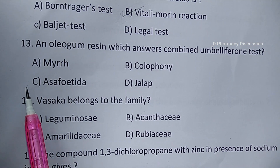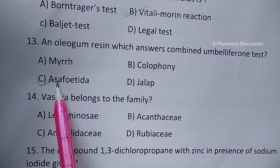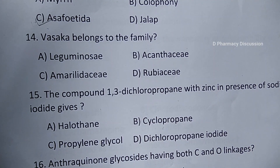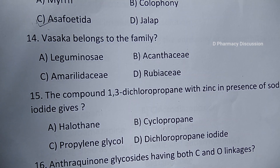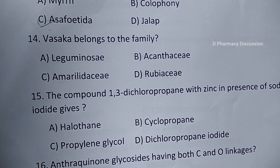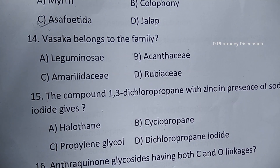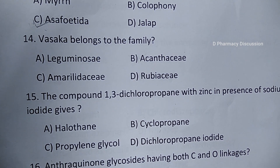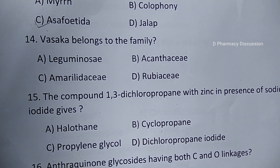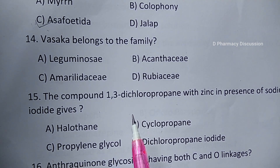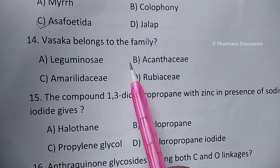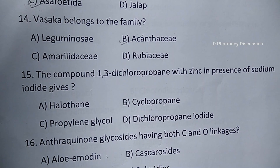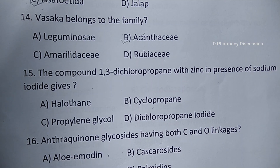Question number 14: Vasaka belongs to the family. Options are A. Leguminosae, B. Acanthaceae, C. Amaryllidaceae, and option D. Rubiaceae. Correct answer is option B, Acanthaceae — Vasaka consists of either fresh or dried leaves of Adhatoda vasaka and belongs to the family Acanthaceae.